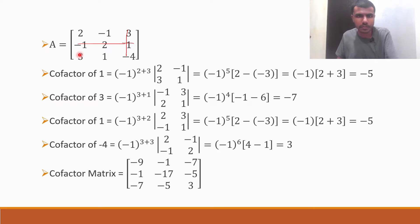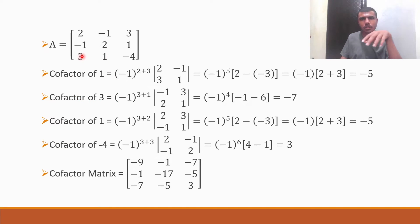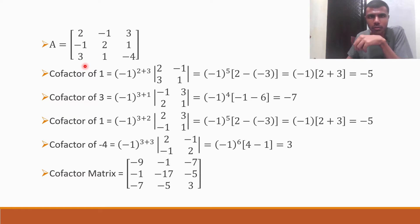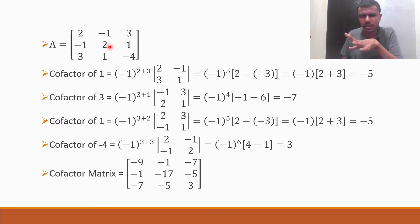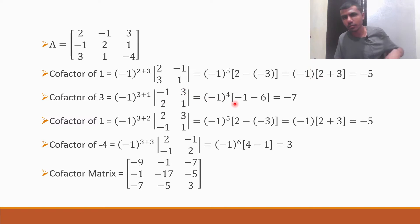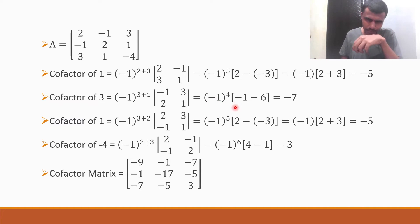Now next, cofactor of 3. 3's position is third row, first column — so 3,1. Minus 1 to the power 3 plus 1 into the determinant of minus 1, 3, 2, 1. Minus 1 into 1 is minus 1, minus 2 threes are 6. Minus 1 to the power 4 you can ignore it because it is plus 1. Minus 1 minus 6 is minus 7.